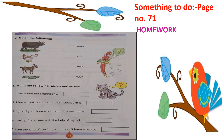Third riddle: I guard your house but I am not a watchman. Who is that animal? Think about what animal guards your house but is not a watchman. Fourth riddle: I swing from trees with the help of my tail. Who? Think and write.